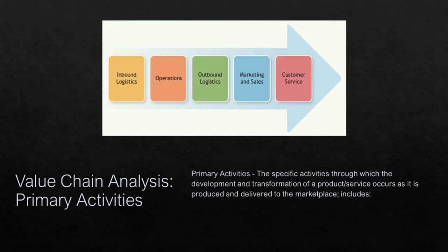According to Porter's model of the value chain, there are primary activities and there are secondary activities. The primary activities consist of five activities: inbound logistics, operations, outbound logistics, marketing and sales, and service. Each of these activities will differ from industry to industry.